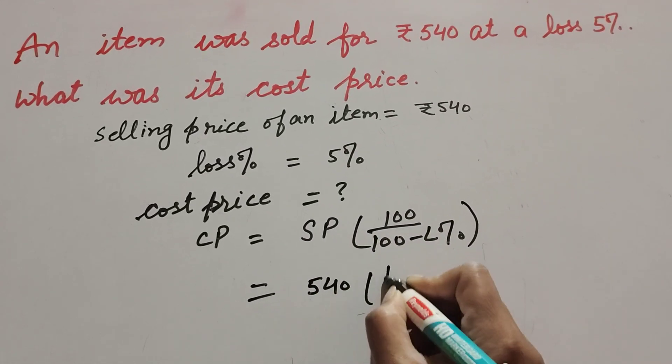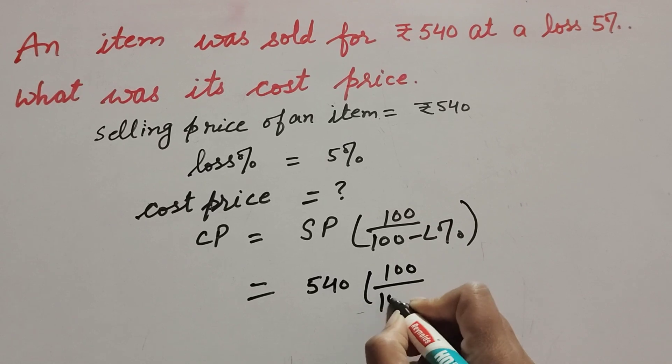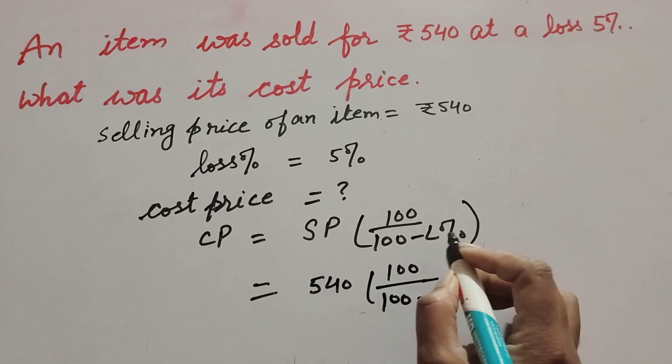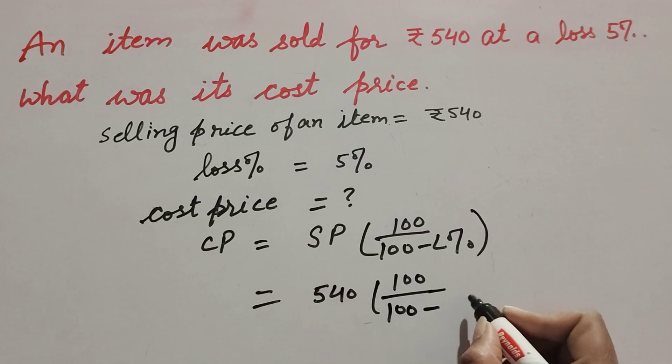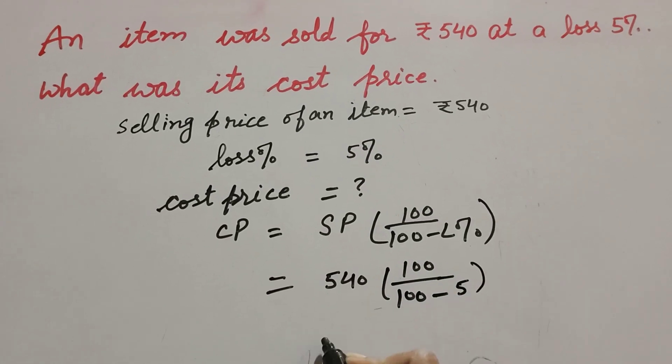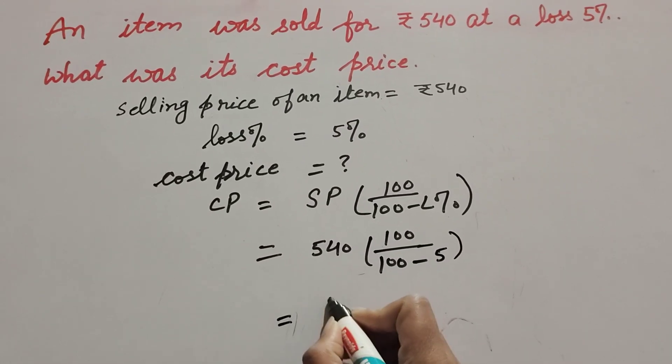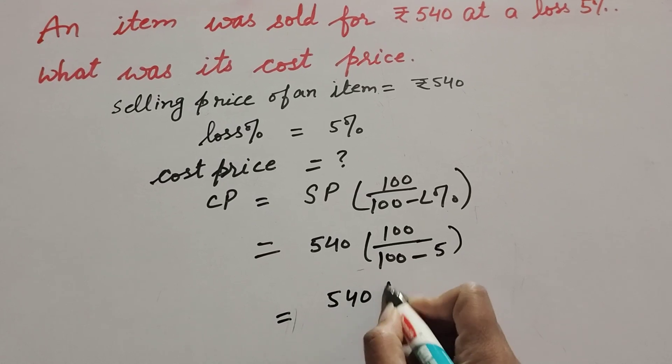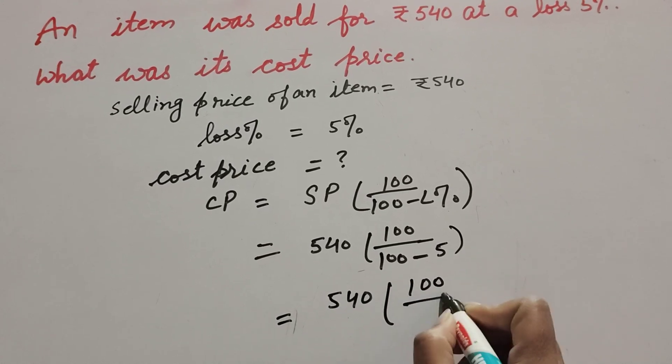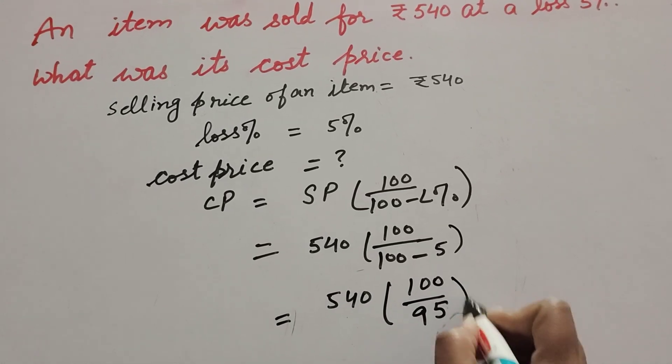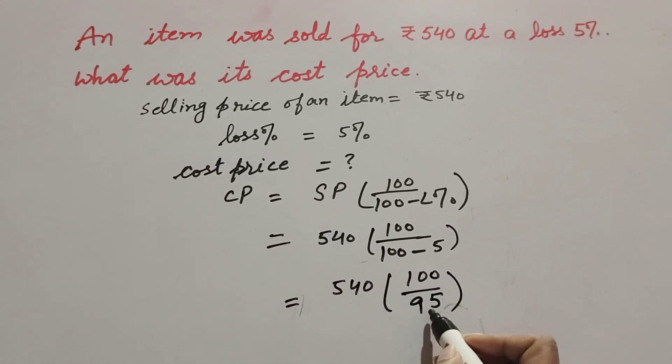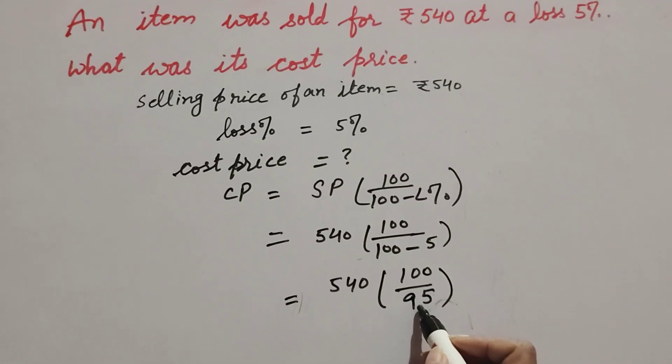100 over 100 minus loss. Loss percentage is also given - it is 5. It is equal to 540 multiply 100 over 100 minus 5, it is 95. Now both are divisible by 5, so we